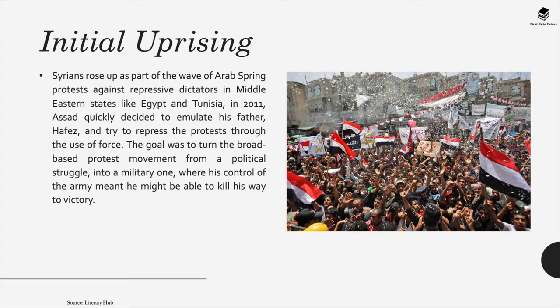When it comes to the initial uprising, Syrians rose up as part of the wave of Arab Spring protests against repressive dictators in Middle Eastern states like Egypt and Tunisia in 2011. Assad quickly decided to emulate his father, Hafez al-Assad, and tried to repress the protests through the use of brutal force. The goal was to turn the broad-based protest movement from a political struggle into a military one, where his control of the army meant he might be able to kill his way to victory.